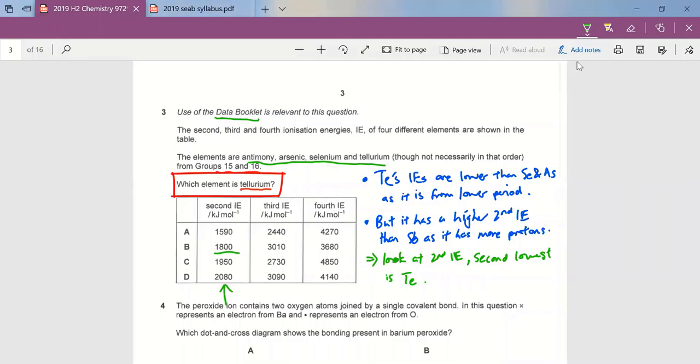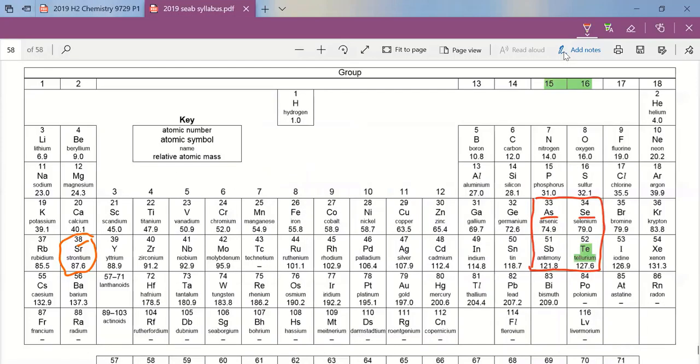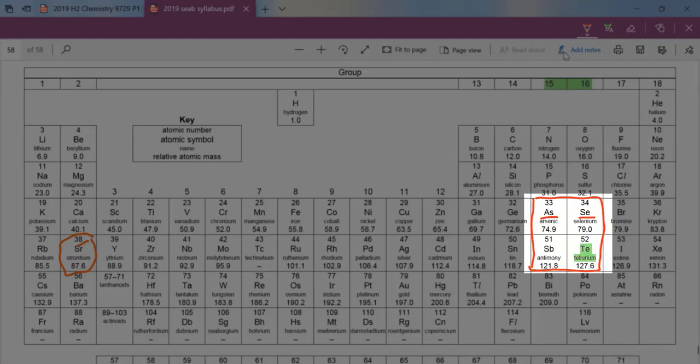When we look at the periodic table, here we have the four elements. You notice that tellurium is in the fifth period, so fifth period is below fourth period. All the ionization energies of tellurium will be lower than that of arsenic and selenium simply because it has an additional quantum shell.